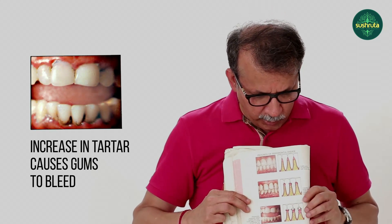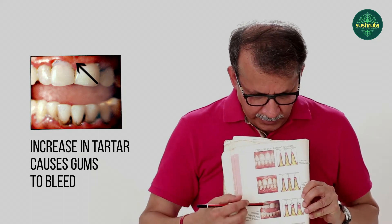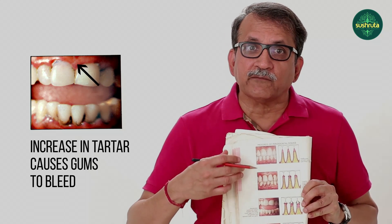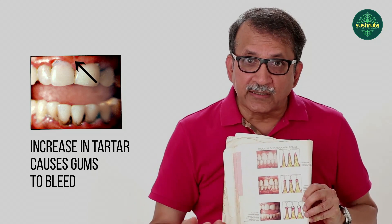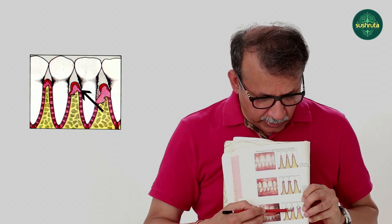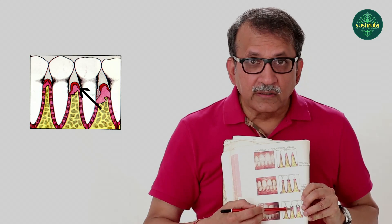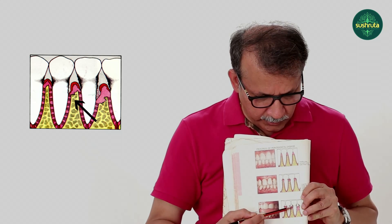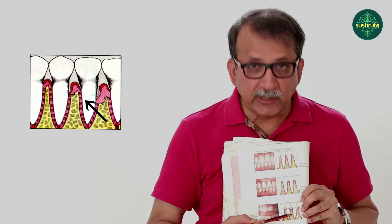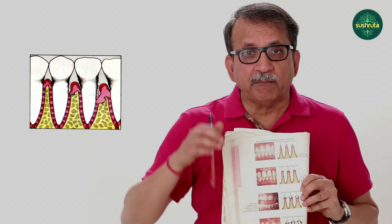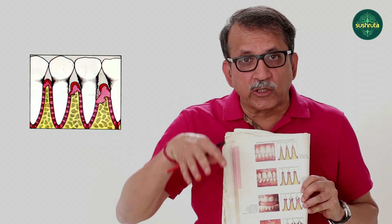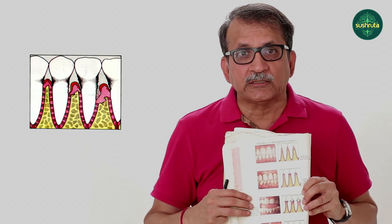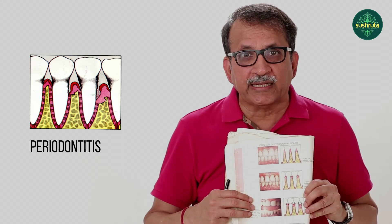As the tartar becomes more and more, the gums get swollen and they start bleeding even without brushing because the tartar has gone down. The periodontia, which is between the root and the bone, gets damaged, the bacteria go into the periodontia, and what as a dentist we call is periodontitis.